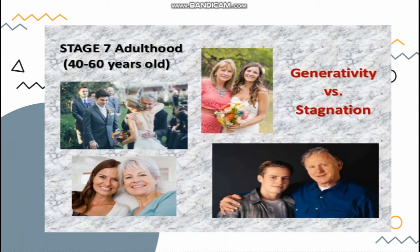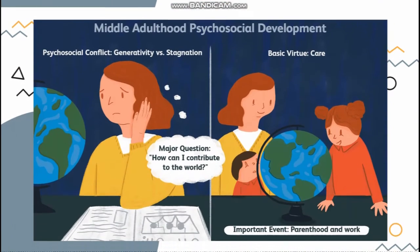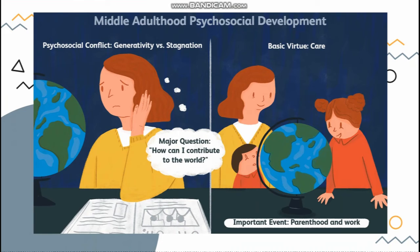Stage seven is generativity versus stagnation, occurring during ages forty to sixty — adulthood. After committing to a romantic relationship, they move on to this next stage. If we succeed in building a good and productive life, we're likely to feel that we're contributing to the world. If we fail, we're likely to feel uninvolved in the world. The major question is: how can I contribute to the world? The important event involves parenthood and work, and the basic virtue here is care — they are caring to others.